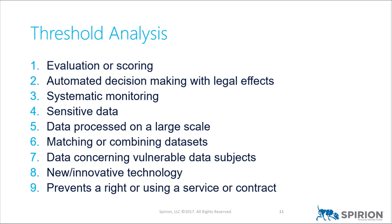Threshold criterion one: evaluation or scoring — the idea of profiling and predicting. Say you're an e-commerce company watching where everyone's going on your site, trying to build a model predicting where they might click next or what ads to serve. You're predicting behavior. Evaluation or scoring is potentially a high-risk item. Also, if it's something that puts someone on a watch list — say the no-fly list in the US — where a score based on different criteria causes someone to meet a cutoff and get placed on that list, that's going to shout high risk. Similarly, HR exams that evaluate employees to predict whether they're likely to commit fraud would all be evaluation or scoring.